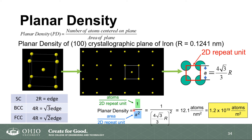So the planar density is 1 over a², where a = 4r/√3. Substituting the known atomic radius for iron and solving, you get a planar density of 12.1 atoms per nanometer squared. This value will vary depending on the material's atomic radius and the specific plane being examined.